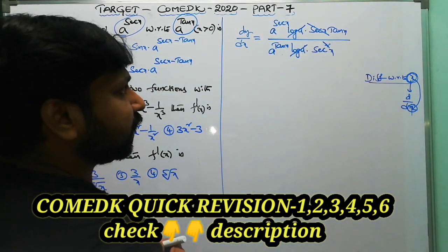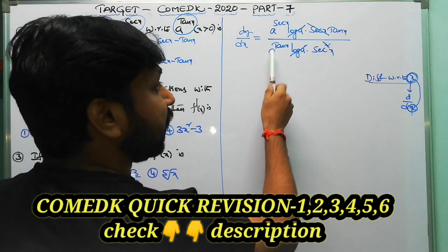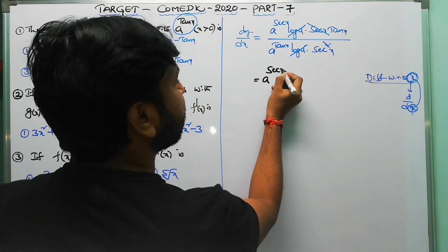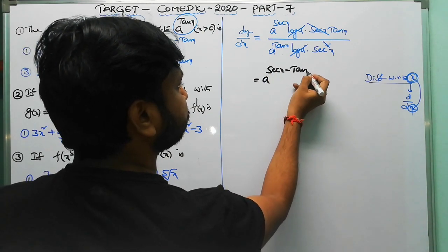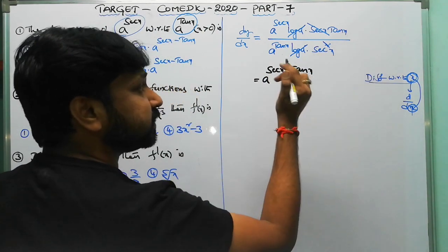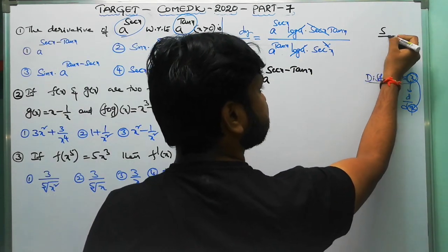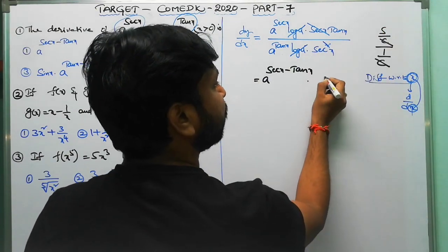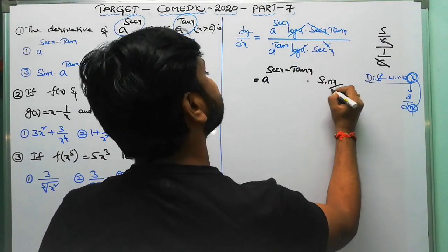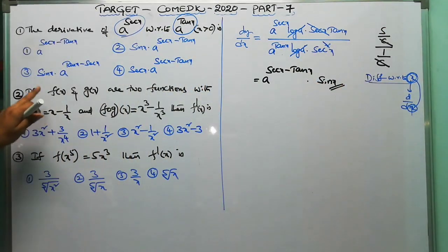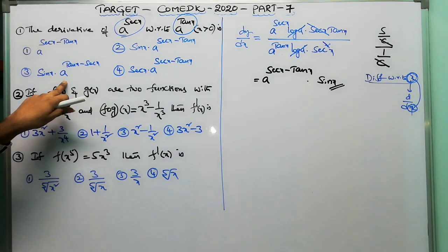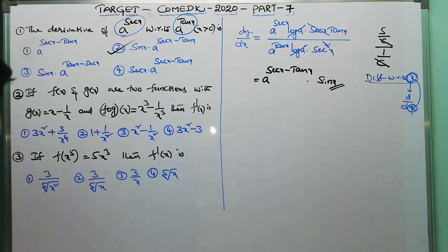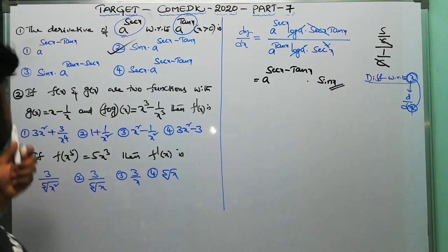After cancellation you get a^(sec x) / a^(tan x), which equals a^(sec x − tan x). Then multiplying by tan(x)/sec(x) = sin(x)/cos(x) · cos(x) = sin(x). So the final answer is sin(x) · a^(sec x − tan x). The second option is the correct answer.